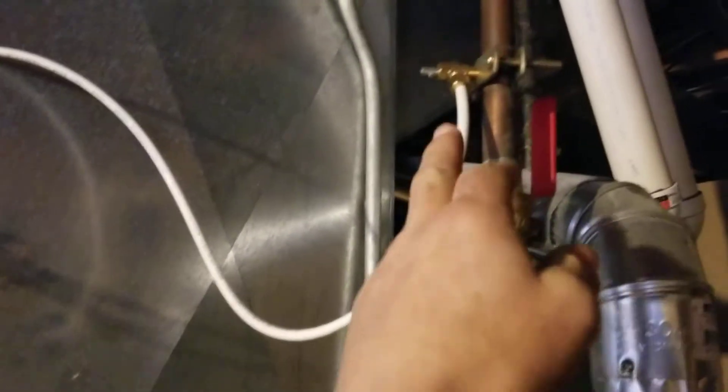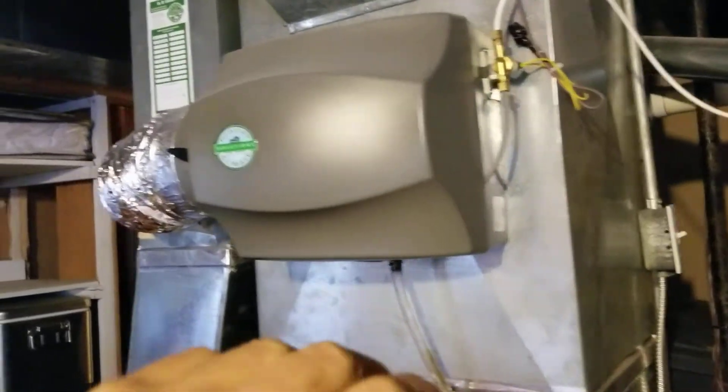It almost seems like that's the hot water side. It's usually on the cold water line. In any case, this valve is opened up and it allows water to go into the humidifier.